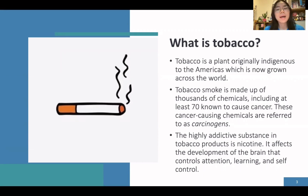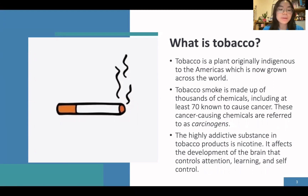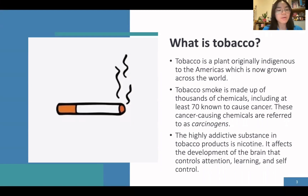We are going to start off by talking about what is tobacco. Tobacco is a plant originally indigenous to the Americas, which is now grown across the world. Tobacco smoke is made up of thousands of chemicals, including at least 70 known to cause cancer. These cancer-causing chemicals are referred to as carcinogens. The ingredients of tobacco contain hundreds of deadly chemicals — we can find these ingredients in rat poison, nail polish remover, and cleaning and disinfecting products. The highly addictive substance in tobacco products is nicotine. It affects the development of the brain that controls our attention, learning ability, and self-control.